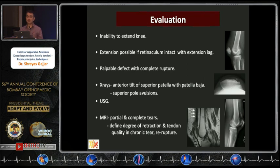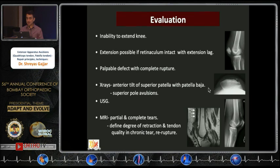When evaluating these patients, they present with inability to extend the knee; however, if the retinaculum is intact, extension can be possible but an extension lag is noted. One can also feel for a palpable defect in cases of complete rupture. On imaging, X-rays show anterior tilt of the superior patella with patella baja and superior pole avulsion. Ultrasonography is also a useful modality, but MRI identifies and differentiates partial versus complete tears and defines the degree of retraction, especially in chronic tears or re-ruptures.